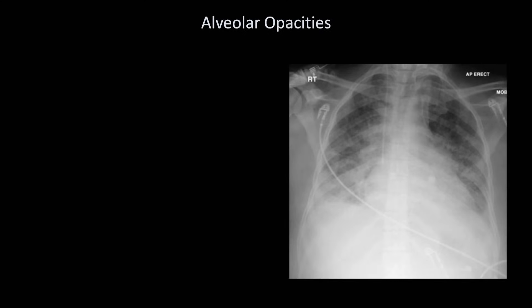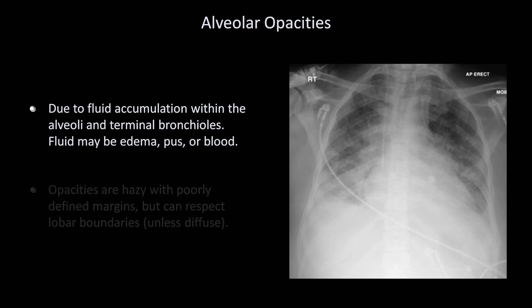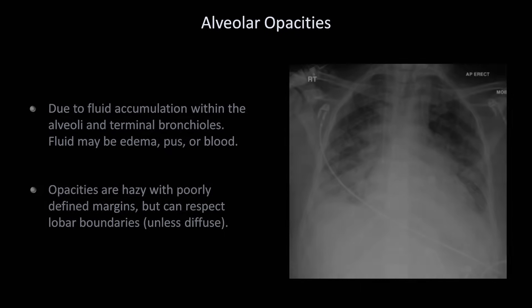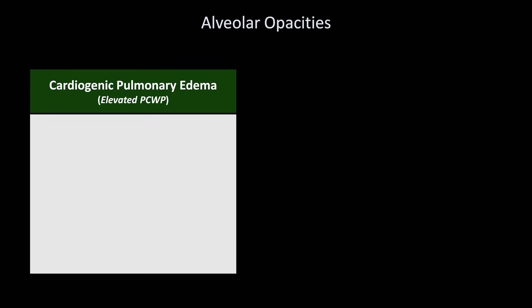Alveolar opacities are due to fluid accumulation within the alveoli and terminal bronchioles. This fluid may be edema, pus, or blood. Opacities are hazy with poorly defined margins, but can respect lobar boundaries unless diffuse. The differential diagnosis for most alveolar opacities can be divided into two main subtypes. First is cardiogenic pulmonary edema, which is that associated with an elevated pulmonary capillary wedge pressure, which is a surrogate for elevated left-sided heart pressures in general.